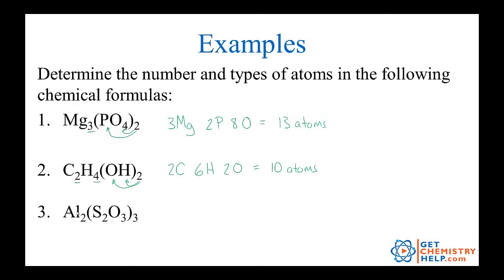Okay, last one. Al2(S2O3)3 taken three times. So we got Al, that's aluminum, we got sulfur, and we got oxygen. How many aluminums? Well, two. How many sulfurs? Well, there's two, but it's inside parentheses, so we multiply that by the number outside. So this subscript three times this subscript two gives me six sulfurs. How about oxygens? Well, there's a subscript three, multiply it by this subscript three, so that gives me nine oxygens. So we'd have a total of 17 atoms in this compound.